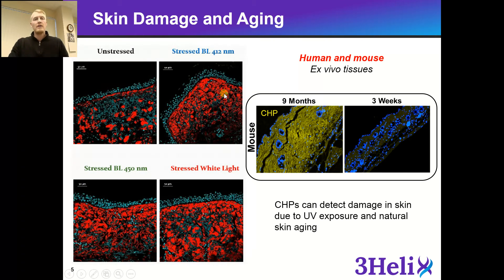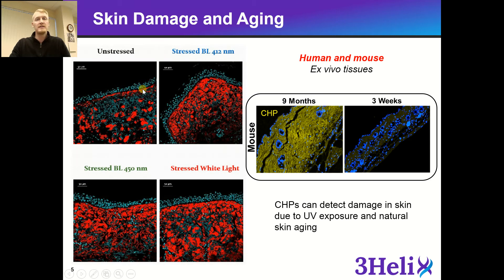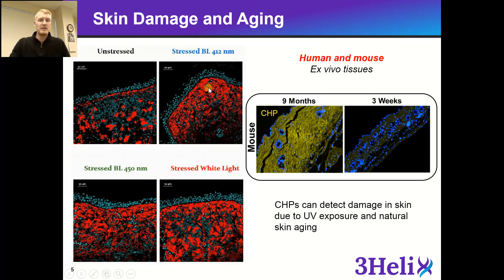Another example I wanted to talk about was skin damage and skin aging. These are ex vivo models where we had an unstressed skin sample and three other stressed skin samples. The CHP stain here is in red, and the teal color is for staining cell nuclei. In a healthy, unstressed model, you see a basal level of collagen remodeling — skin has a high content of collagen and remodeling going on. However, when you start to damage it using UV light, you see an increase of CHP staining, as indicated by the higher levels of red fluorescence.